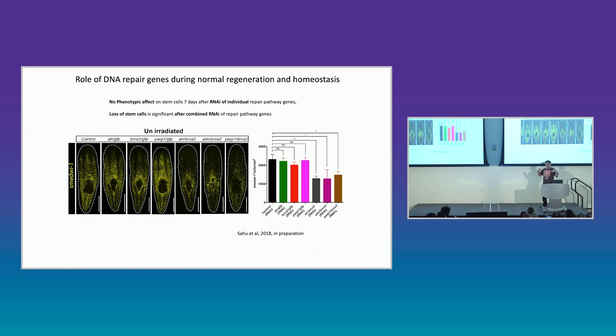So our major genetic assay is to inject double-stranded RNA into the gut and use that as a way of knocking down gene expression. That has some disadvantages and some advantages. One disadvantage is that we're never going to get a complete null, but the fact that you don't get a complete null can be useful. So if we look at the effect of knocking down DNA repair pathways in unirradiated animals, actually the animals are fine. And we have to knock them down in pairs before we see any effect on stem cell numbers.